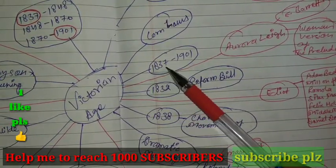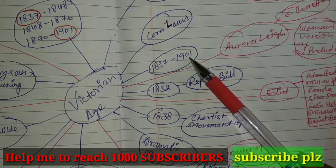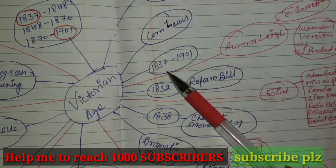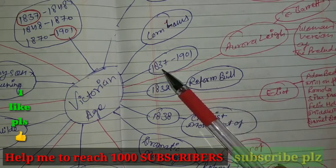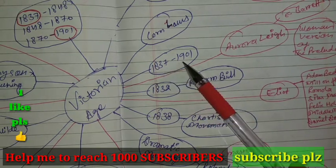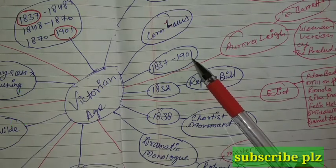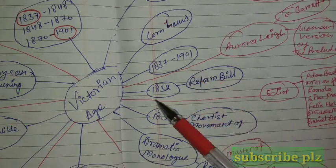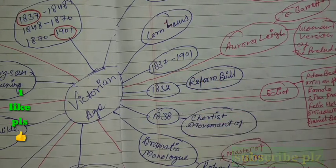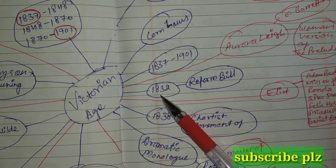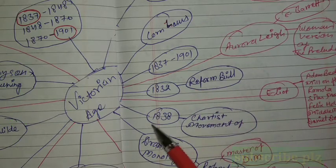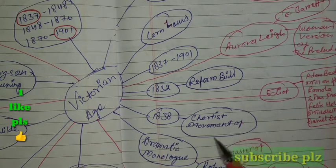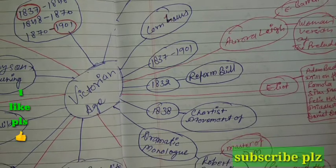The Victorian age happened between 1837 and 1901. 1837 is the year when Queen Victoria ascended to the throne, and 1901 is when she died. 1832 is again an important year to remember because of the Reform Bill, and 1838 the Chartist Movement was there.